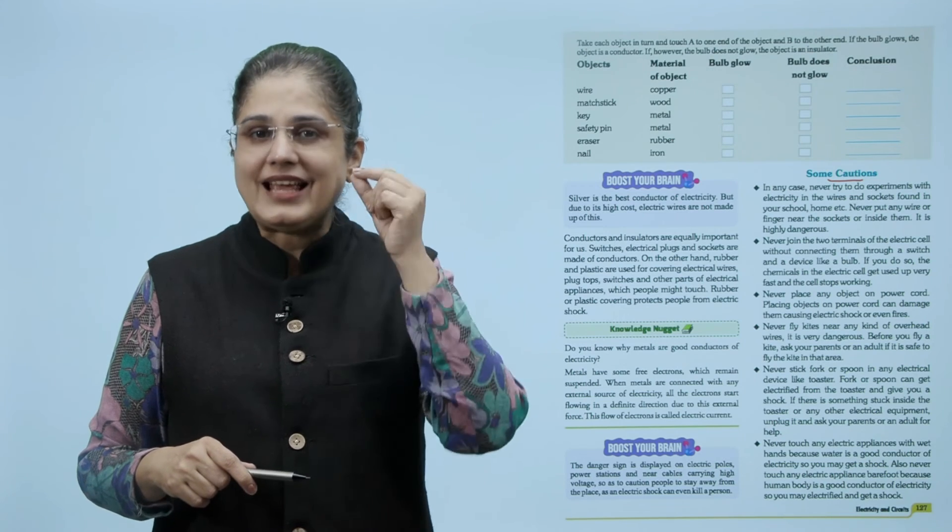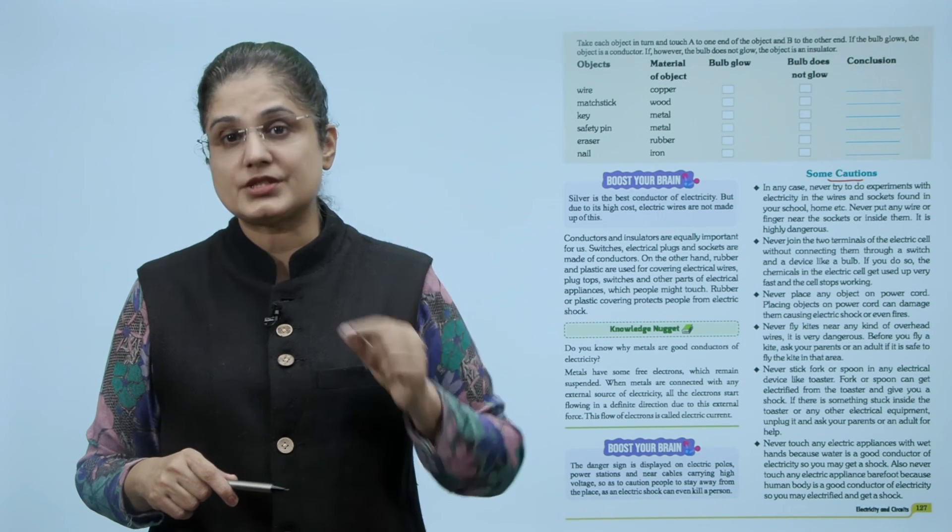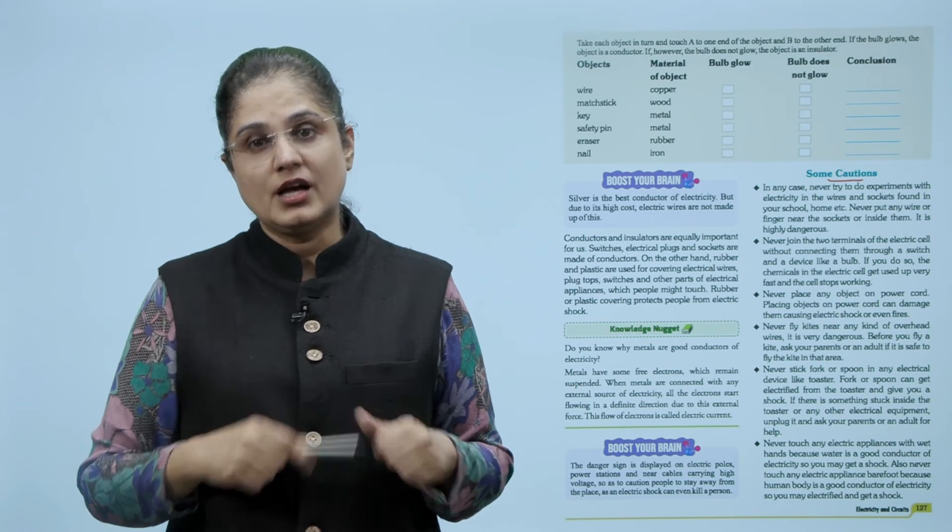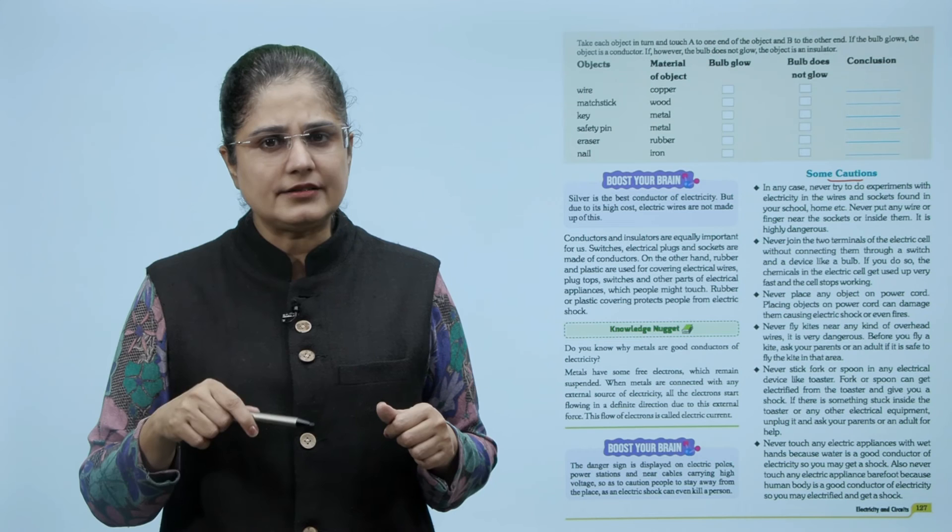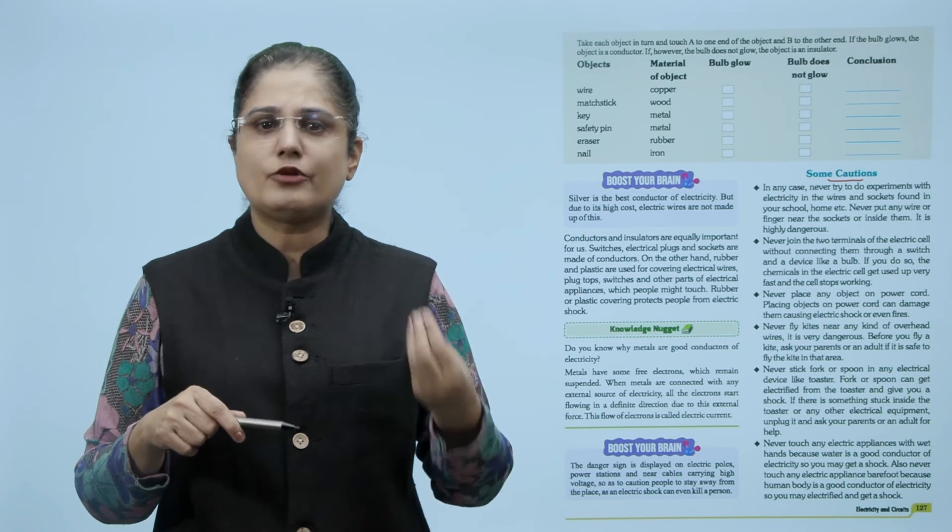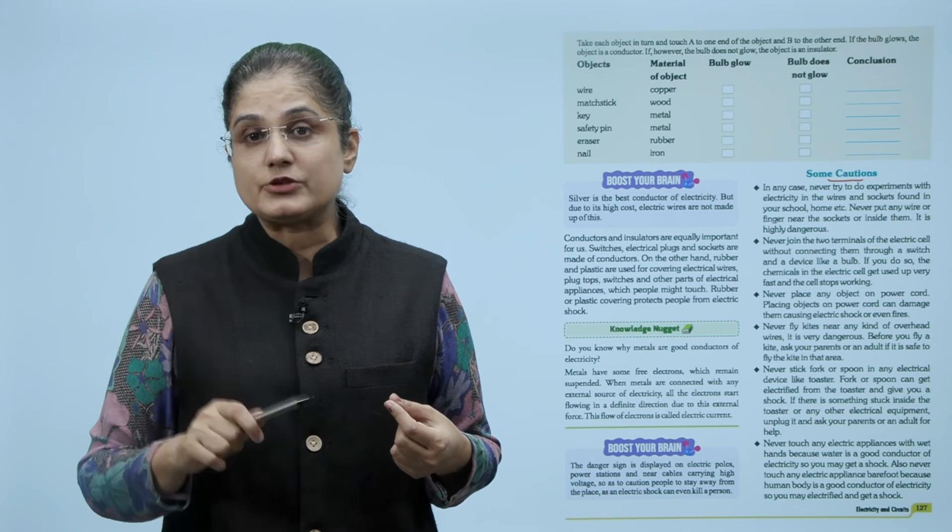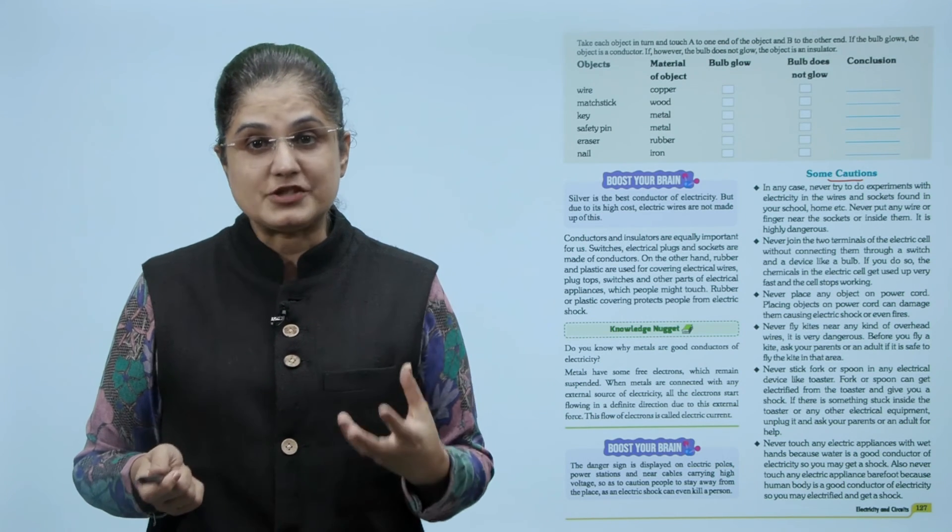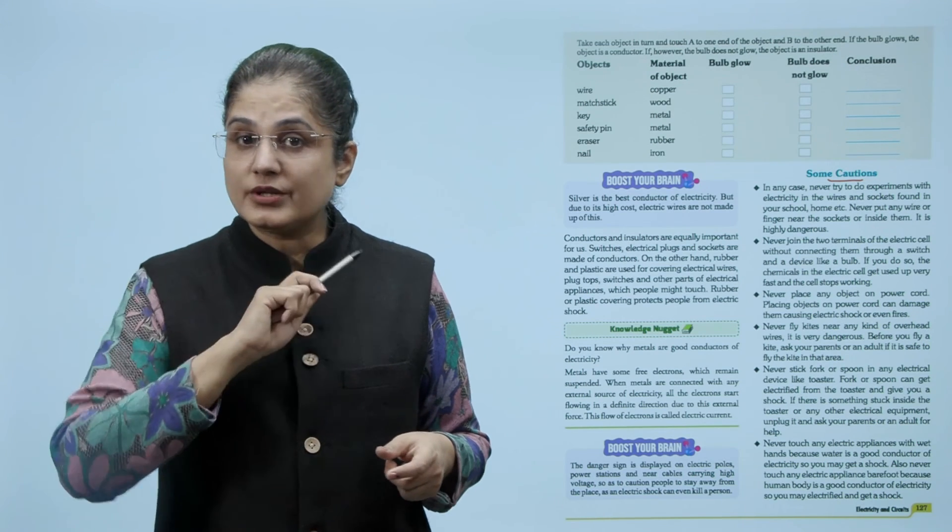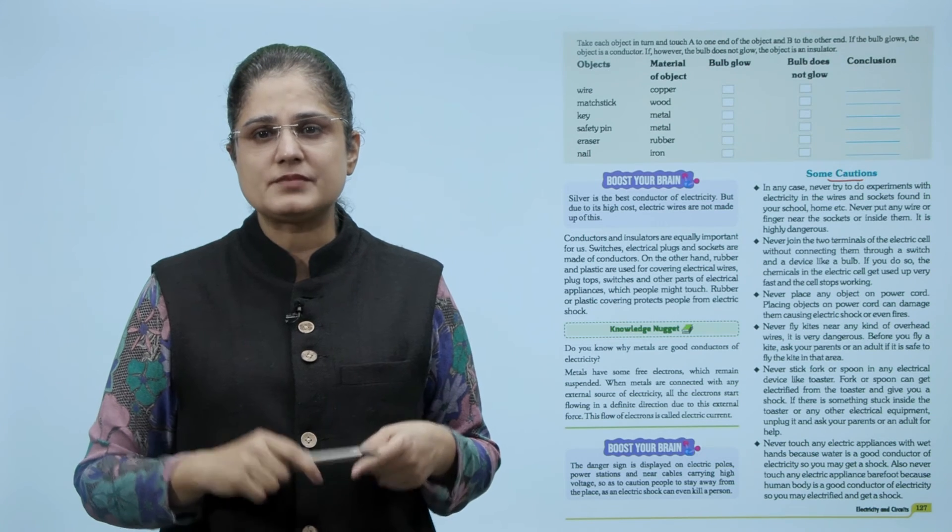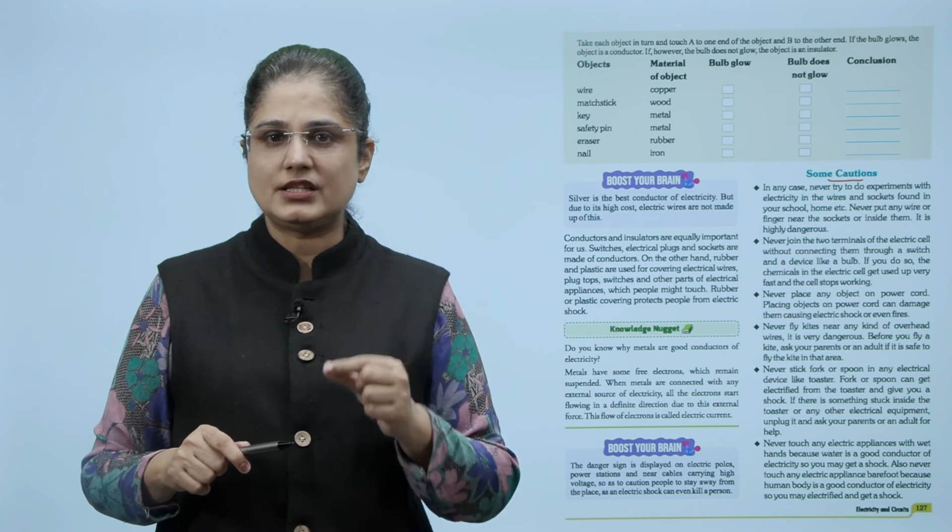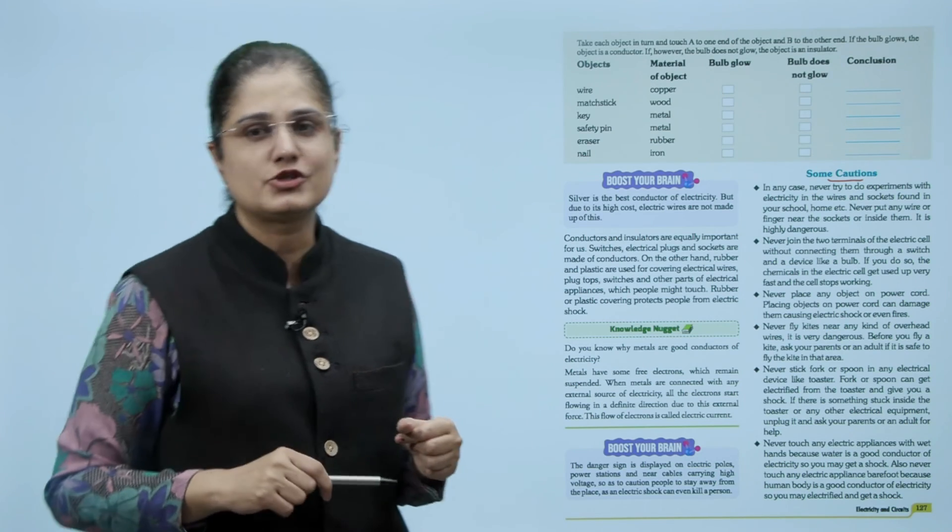Never stick fork or spoon in any electrical device like toaster. Fork or spoon can get electrified from the toaster and give you a shock. If there is something stuck inside the toaster, unplug it and ask your parents or an adult for help. Never touch any electric appliance with wet hands because water is a good conductor of electricity and you may get a shock. Also, never touch any electric appliance barefoot because human body is a good conductor of electricity. So you may get electrified and get a shock.